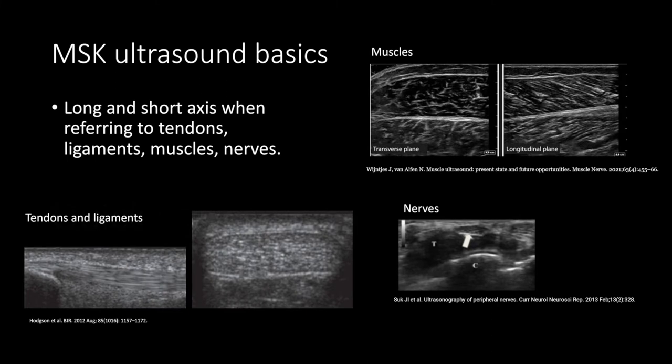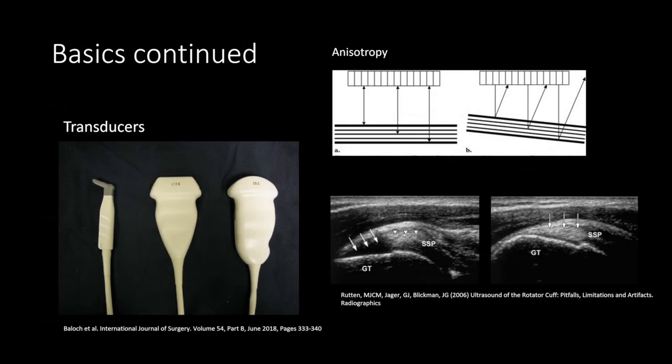Long and short axis should be used to describe the orientation of tendons, ligaments, muscles, and nerves. Tendons and ligaments both have an echogenic fibrillar pattern, while muscles are hypoechoic with an echogenic fibroadipose septae, and nerves have a fasciculated appearance. These are the main transducers used in MSK ultrasound. For evaluation of the knee, you want to use the middle high frequency linear transducer. Regarding anisotropy artifact, you want the sound beams from the probe to be directly perpendicular to the tendons and ligaments.